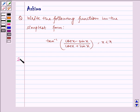Now let us write the solution. We have tan inverse of (cos x - sin x)/(cos x + sin x). Now, dividing numerator and denominator both by cos x.